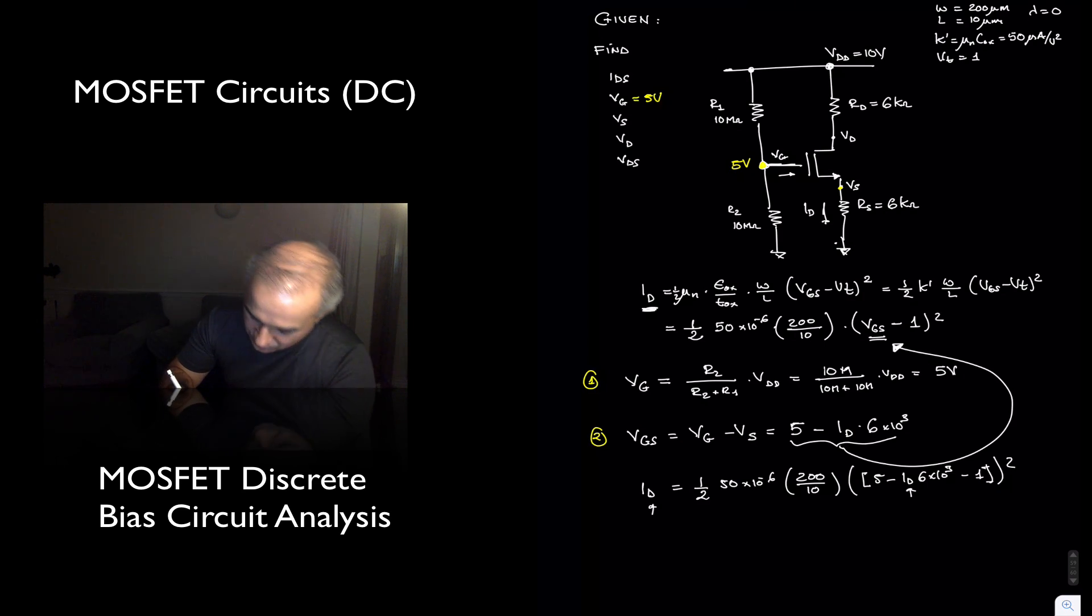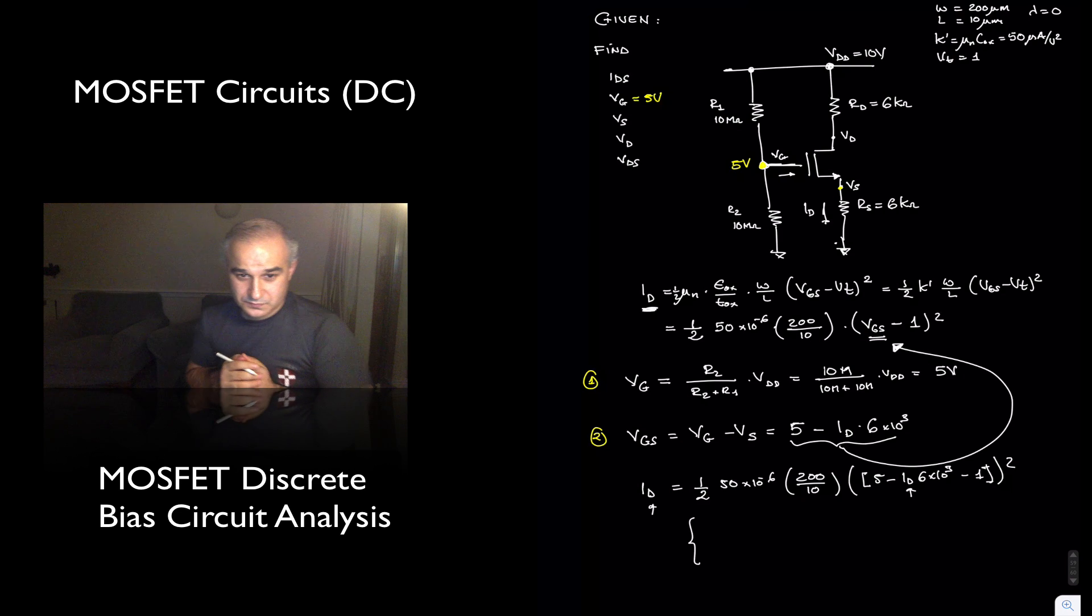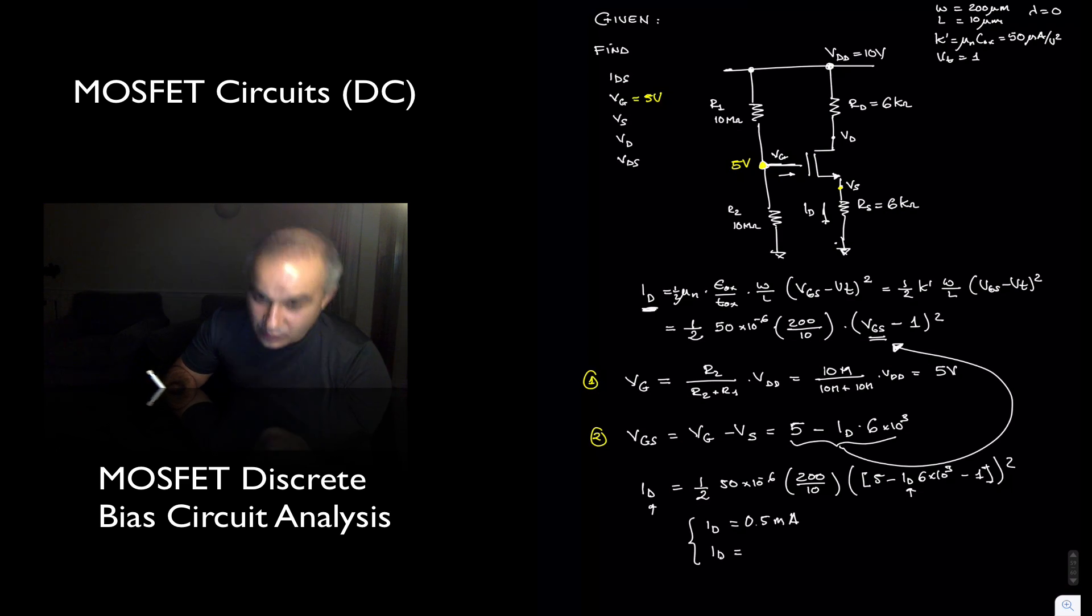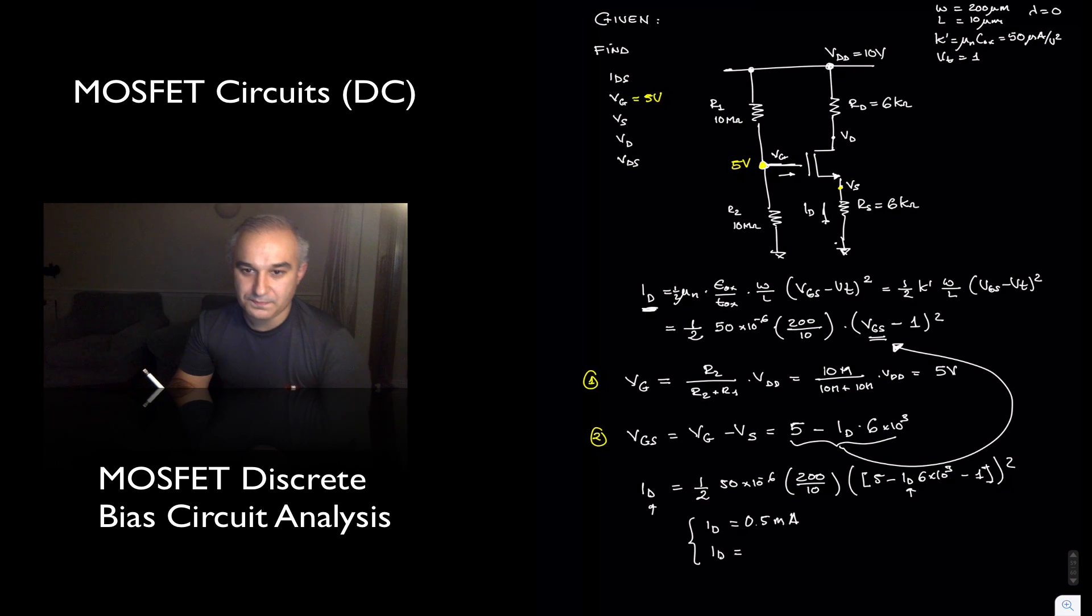And if you do this, because of the quadratic equation, you're always going to find two values. We actually get Id equals 0.5 milliamps, and Id equals 0.89 milliamps.